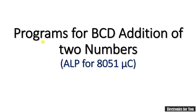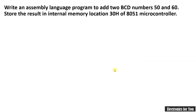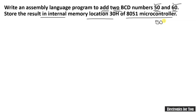In this video I will explain a program for BCD addition of two numbers for the 8051 microcontroller. The problem is: write an assembly language program to add two BCD numbers 50 and 60, and store the result in internal memory location 30h. When writing the program for the 8051 in assembly language, numbers are automatically considered as hexadecimal, so 50 and 60 become 50h and 60h.